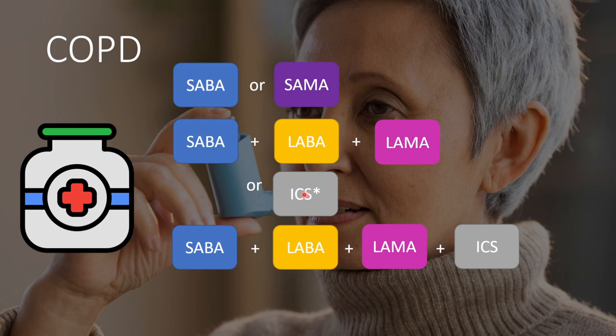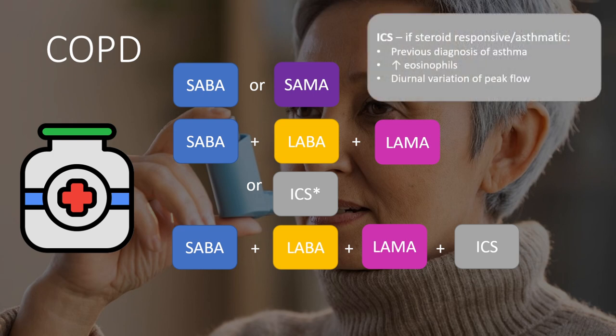Inhaled corticosteroids are given to steroid-responsive patients — those with an asthmatic phenotype. This could be because they have a previous diagnosis of asthma, raised eosinophils on blood count, a diurnal variation of peak flow, or variation in FEV1 over time. If they are potentially steroid-responsive — such as having eczema and using steroids for that — they may be preferentially given ICS at step two instead of LABA and LAMA.